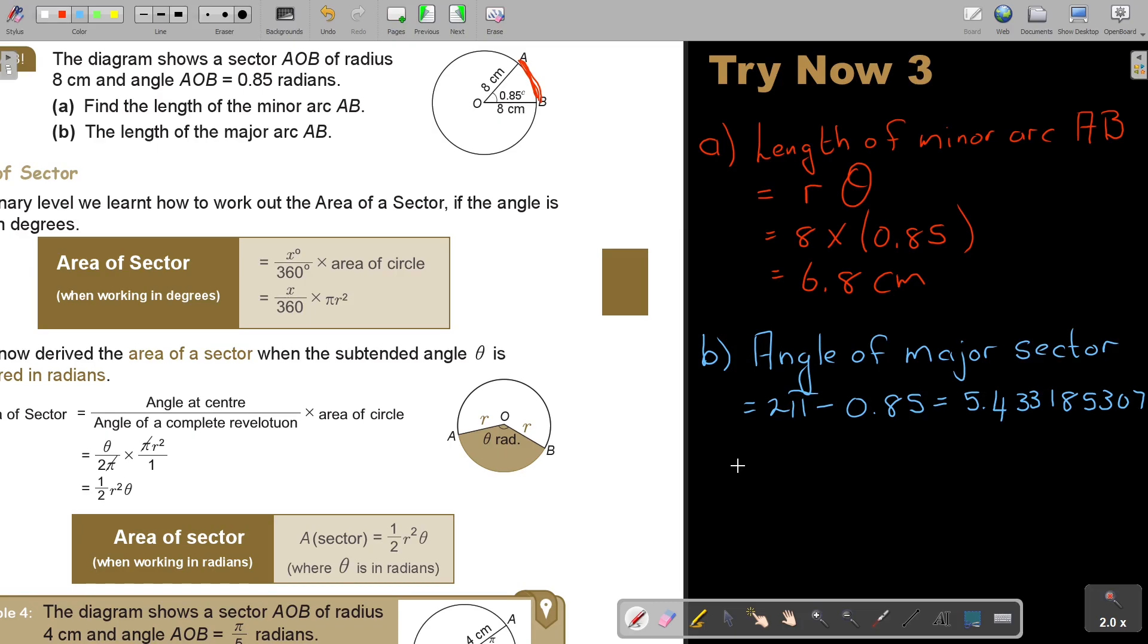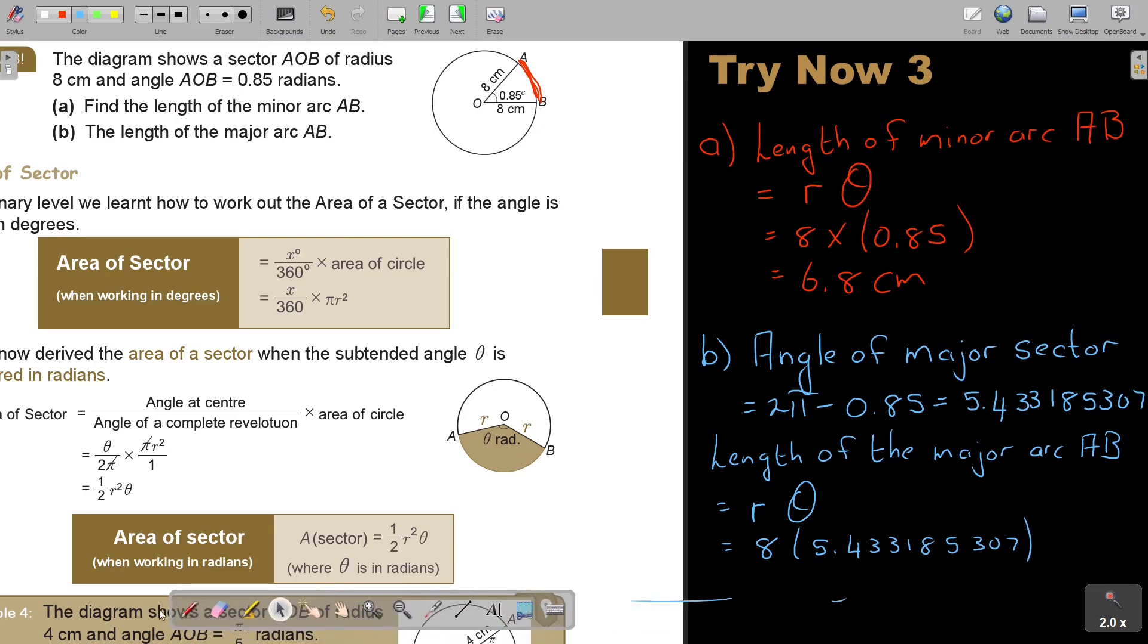And then, I'm going to work out the length of the major arc of AB. And that will then be - it's again going to be just that r times θ. R is still 8, and now it's just that 5.433318. I think if you approximate it just to two or three decimal places, then the answer will be exact. But for now, I think I'll just leave it unapproximated. And then I just press on my calculator and I will get, make it to three significant figures, 43.5 centimeters. And that will be that for the major arc.